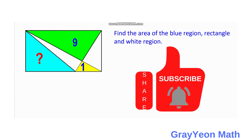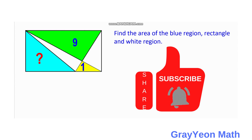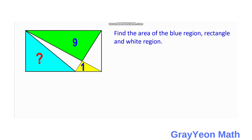Welcome to Grillionman. We are asked to solve this problem. We have a rectangle, and inside this rectangle are three triangles: the green with an area of nine square units, the yellow with one square unit, and a blue triangle with an unknown area. There are also two white triangles that together form the whole rectangle. We are to find the area of the blue region, the rectangle, and the white region.